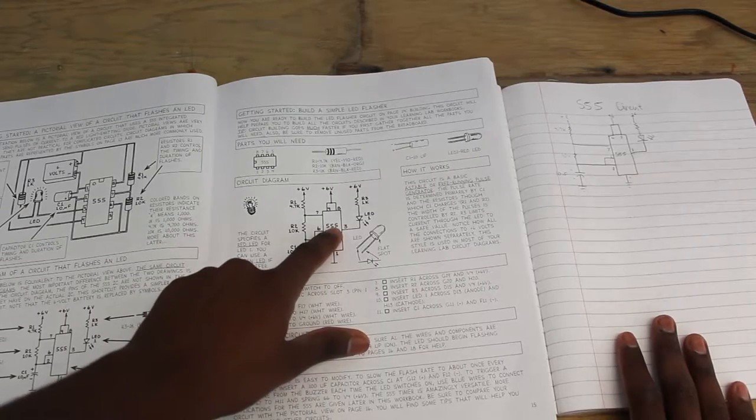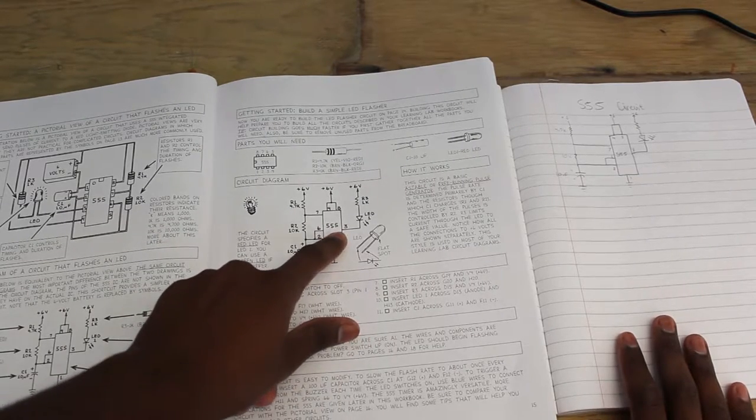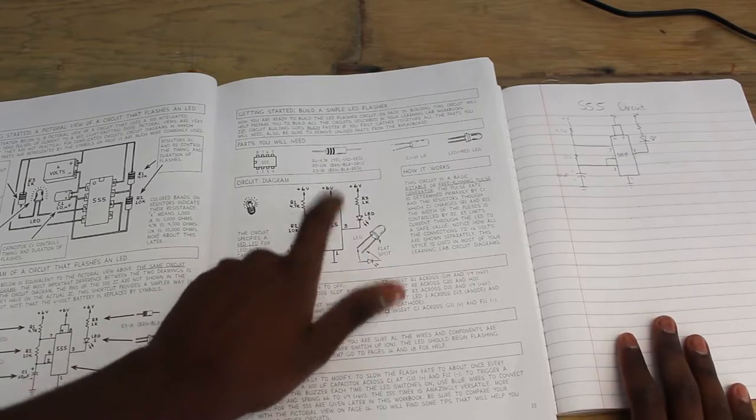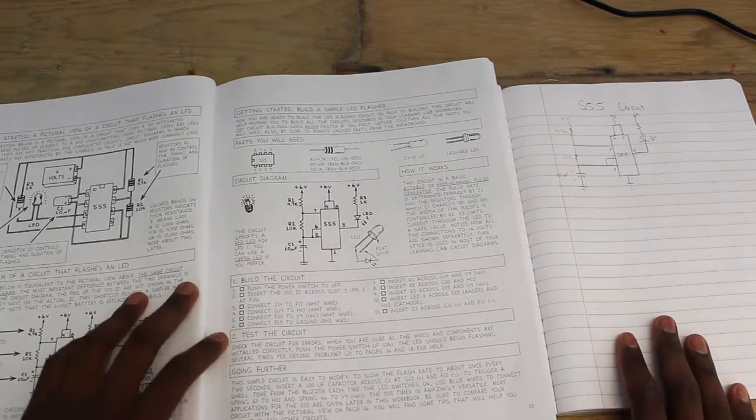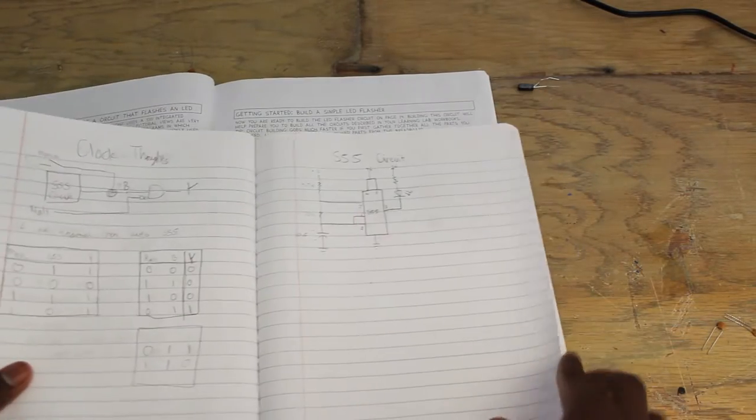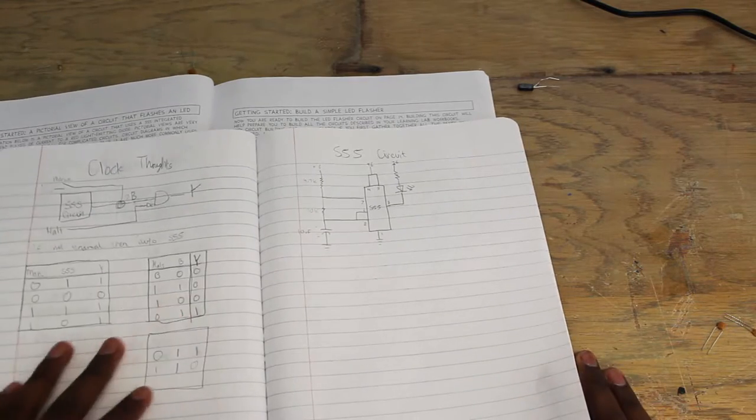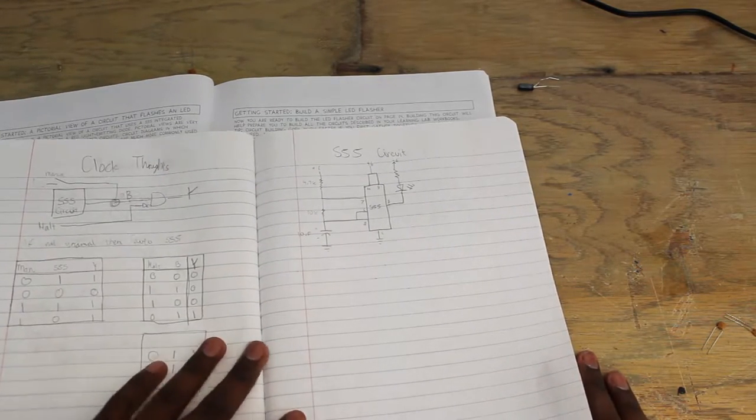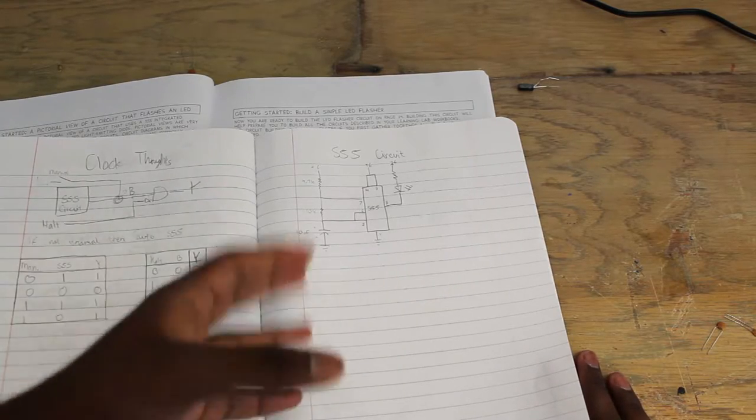The output of the 555 is the third pin, which you can have go through an LED and then to R3. So you can just go ahead and copy this circuit. I went ahead and copied it here on my page. But now what I wanted to do is I wanted to have a halt switch. So it'll automatically be flashing the output.